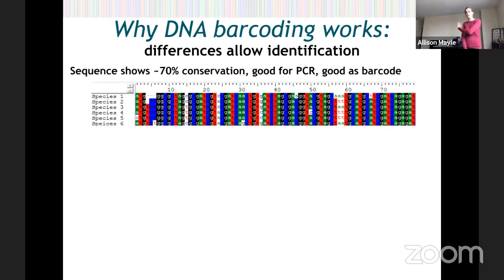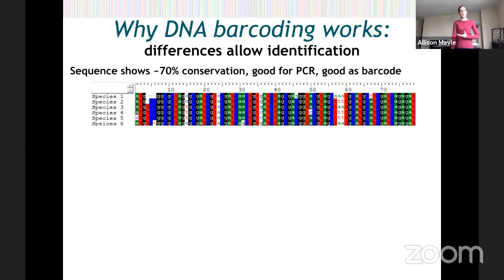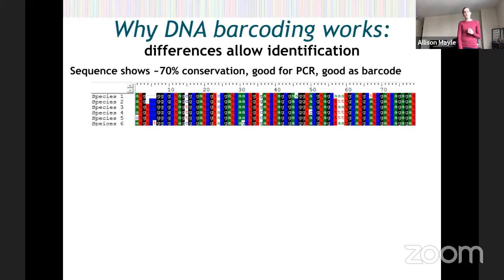Before I show you the actual lab stuff for PCR, I want to explain a little bit more about why DNA barcoding works. Differences between species in their DNA allow us to identify the species. Here on screen is a really good sample of a region of DNA that we could use for barcoding. It has about 70% conservation — from one species to the next, about 70% of the bases are exactly the same. This makes it good for PCR. On the right-hand side you can see a whole stretch of bases that are exactly the same in every species listed, species one through six, so a PCR primer would be able to bind there to every single organism's DNA.